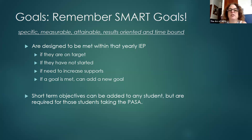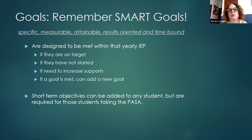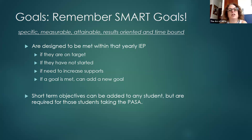The IEP goals are designed to be met within that yearly IEP. With progress monitoring, we want to see if the student is on target to reach the goal. Possibly they haven't started a goal, or it becomes apparent from the progress monitoring that a goal hasn't been addressed and needs more time. If supports need to be increased or progress has become stagnant, you can get this information from the progress monitoring. If a goal is met, you can add a new goal — you don't have to wait until the next IEP cycle.